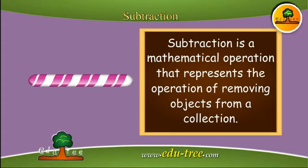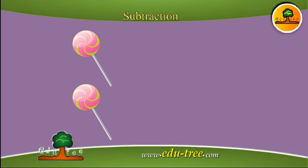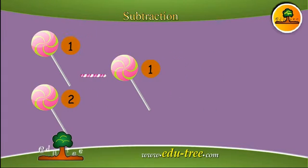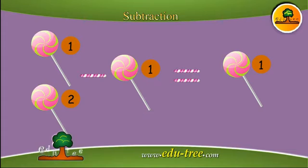Subtraction is a mathematical operation that represents the operation of removing objects from a collection. Suppose you have two lollipops and I take one — you will be left with only one lollipop. In other words, we can say that subtraction is a take away.